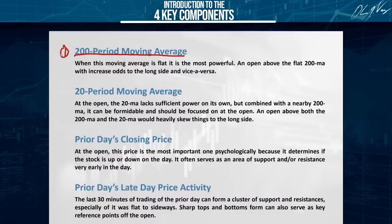It doesn't matter if you're trading a two-minute timeframe — it's the 200 period moving average of the two-minute chart. If you're trading a five-minute timeframe, it's the 200 period moving average of the five-minute chart. If you're trading a daily timeframe, it's the 200 period moving average of the daily timeframe. Timeframes don't matter — whatever timeframe you trade.